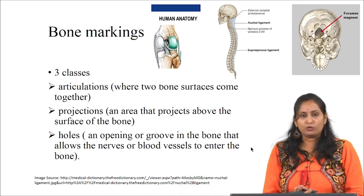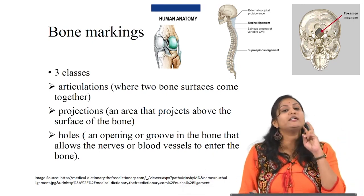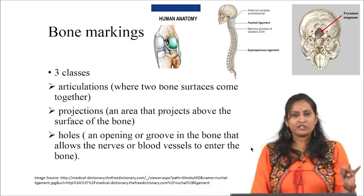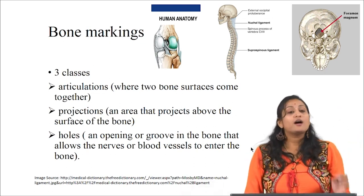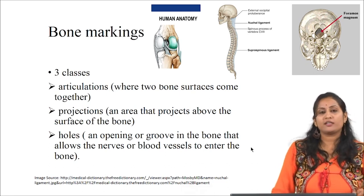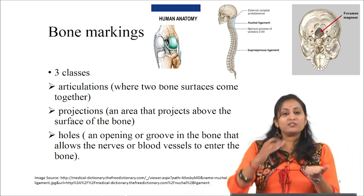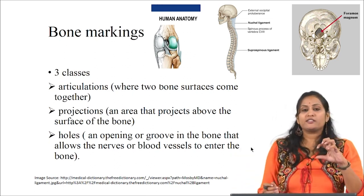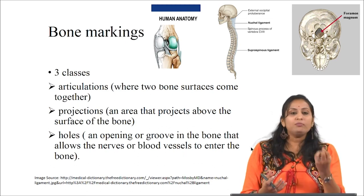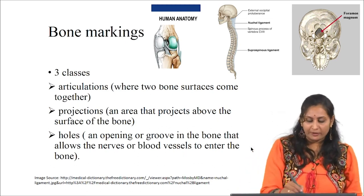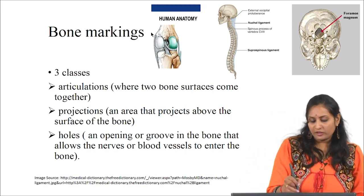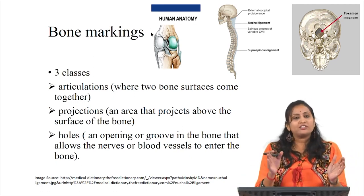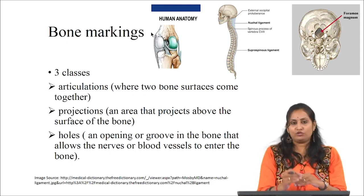The surface features of bone are known as bone markings. There are three general classes of bone markings: articulations, projections, and holes. As the name implies, articulations are where two bone surfaces come together. These surfaces conform to one another — one being rounded and the other being cupped — in order to facilitate the function of articulation, which means joint. For example, the knee joint.